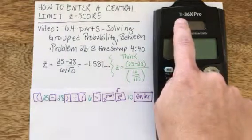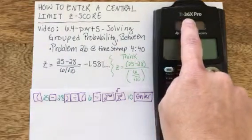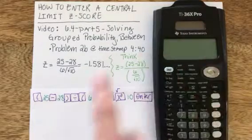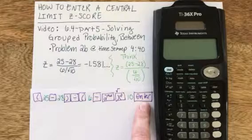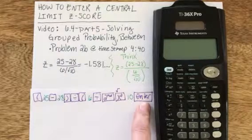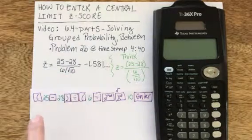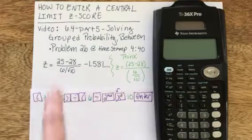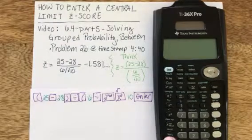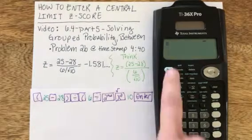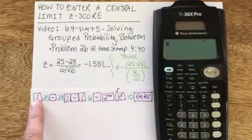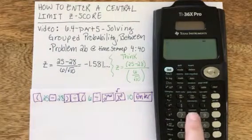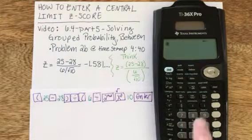We're going to be solving this problem on the TI-36 X Pro. I've written in purple the keystrokes you need to solve this problem, and the blue is the values specific to this problem. I'll go ahead and turn my calculator on — I've got my flashing cursor and I'm ready to start with an open parenthesis, located right above the 8 on the keypad.